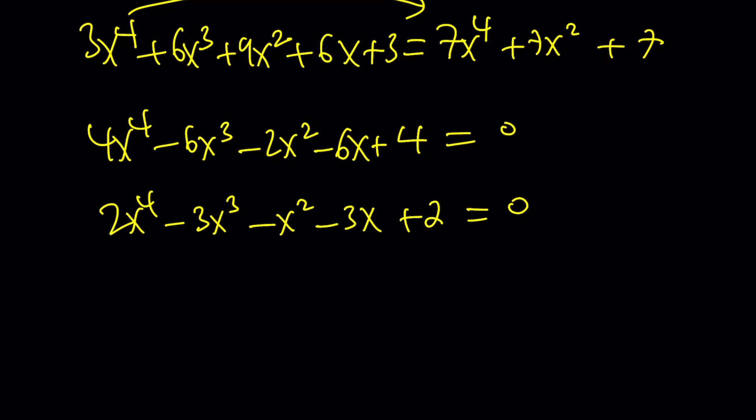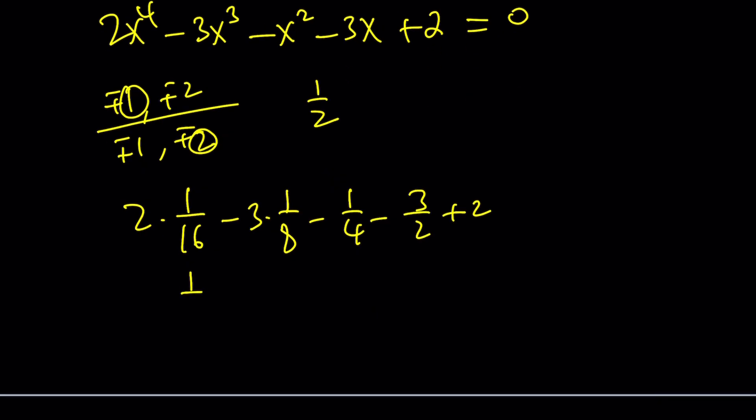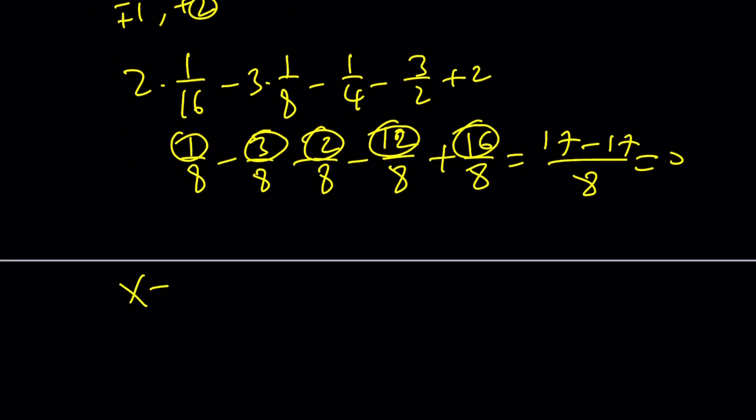And you can pretty much look at factors of 2 divided by factors of 2, kind of like all possibilities like plus minus 1 plus minus 2 divided by plus minus 1 plus minus 2. And when you look at all these choices one of these should work. How about testing 1 half? Let's just, because 1 half comes from 1 and 2 here, and if you just test it out. 1 over 16 minus 3 times 1 over 8 minus 1 4th minus 3 halves plus 2. That's going to give us 1 over 8 minus 3 over 8 minus 2 over 8 minus 12 over 8 plus 16 over 8. This is going to be 16 plus 1, 17 minus 3 plus 2 plus 12 is also 17. And yes, that's 0. So x equals 1 half is a solution that we found.